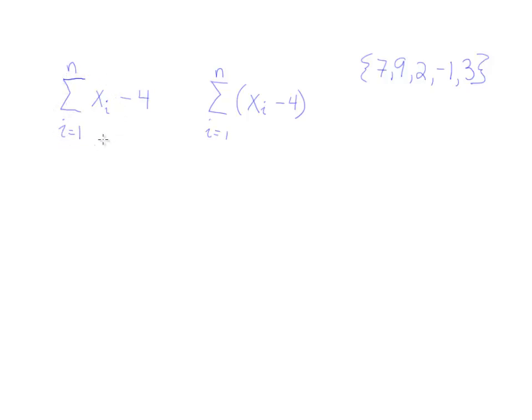In this summation, we have the summation symbol, then a subtract 4 at the end of it. You want to see this as two separate terms because there's nothing joining them together. So this first expression needs to be evaluated as you see it going left to right, and then you subtract 4 from the final answer.